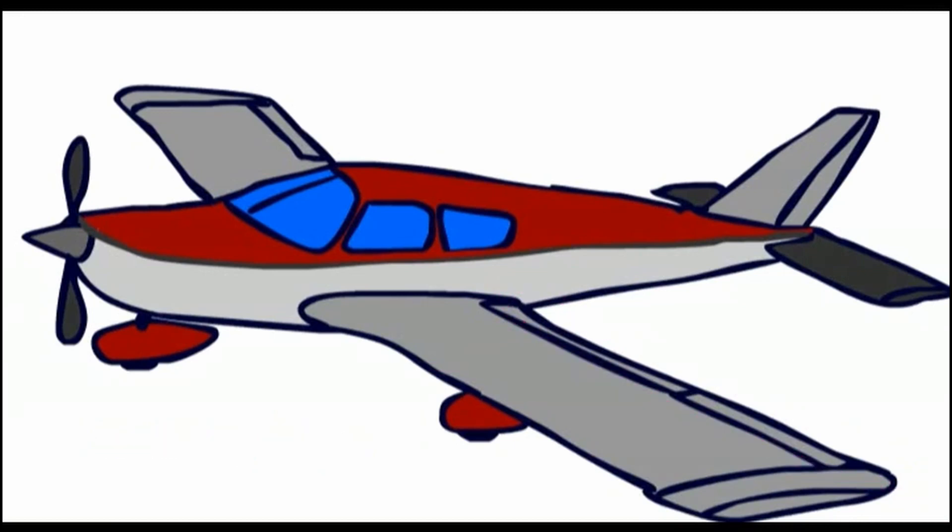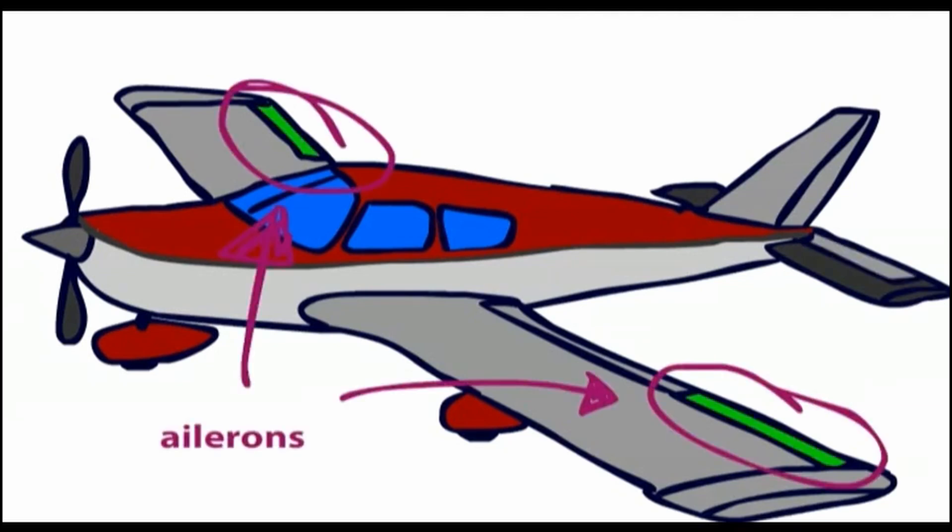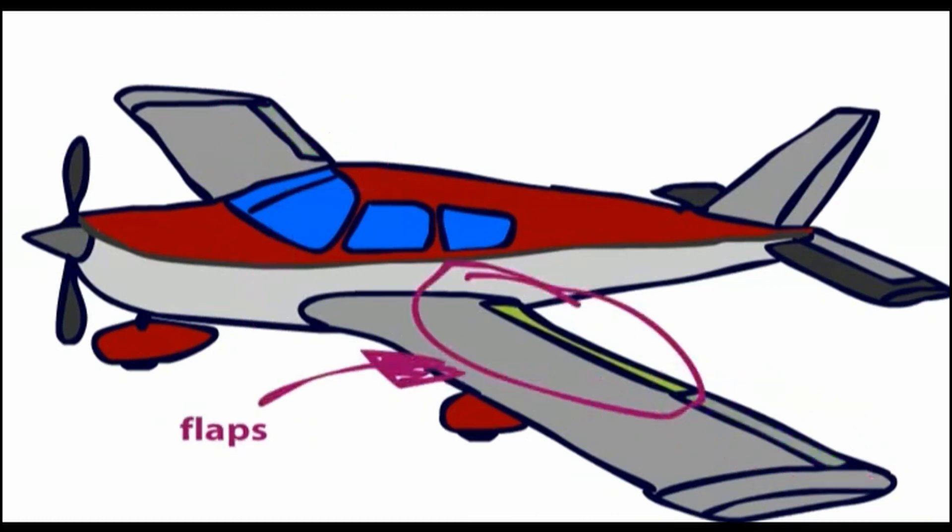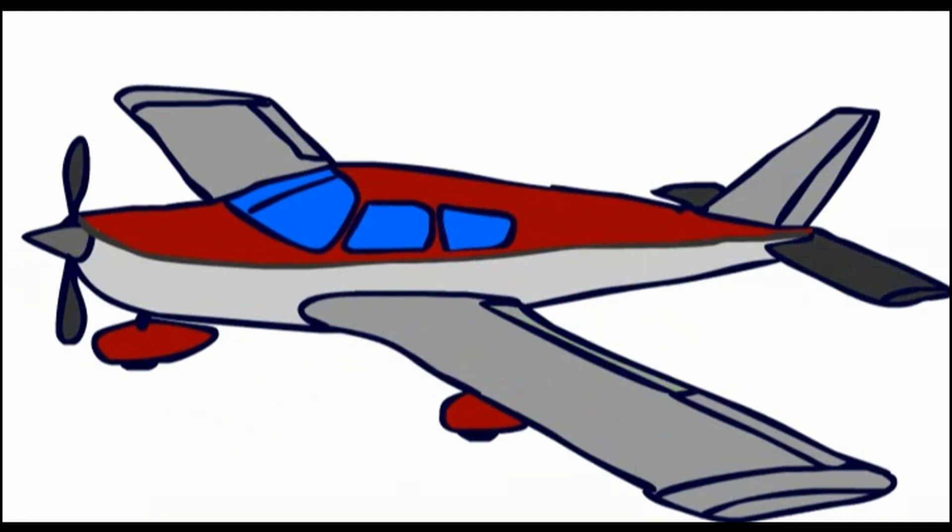We also have moving surfaces on the wing to help us control the plane. These are the ailerons, and they are usually situated on the outer part of the wing. More on these in a later video. In addition, the flaps, shown here on the wing, are used to help to create extra lift, and slow us down when we are coming in for landing, which is always helpful.